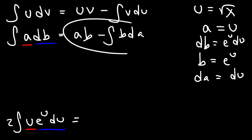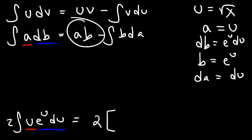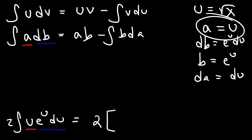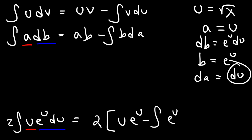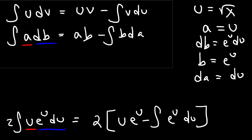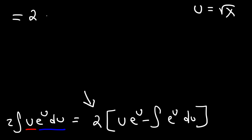So now we're ready to use that formula — and keep in mind, there's a 2 in front of the integral. The integral of u e to the u du is a times b, where a is u and b is e to the u, minus the integral of b da, where b is e to the u and da is just du. Now let's distribute the 2. So this is all equal to 2u e to the u, minus 2 times the integral of e to the u du.